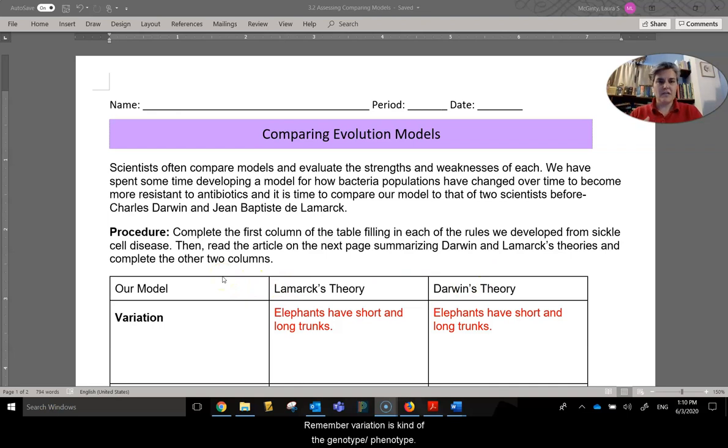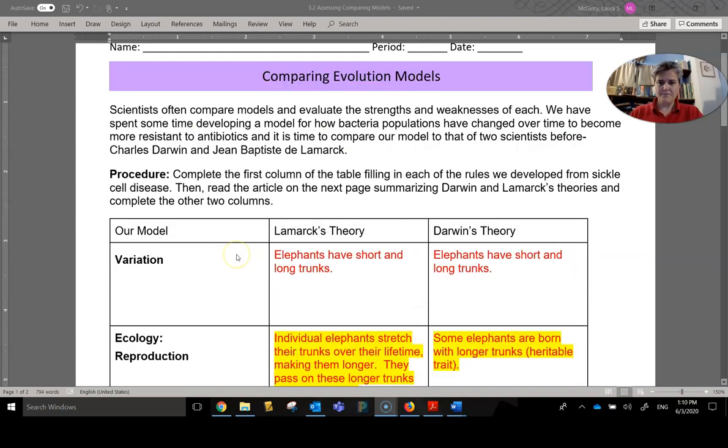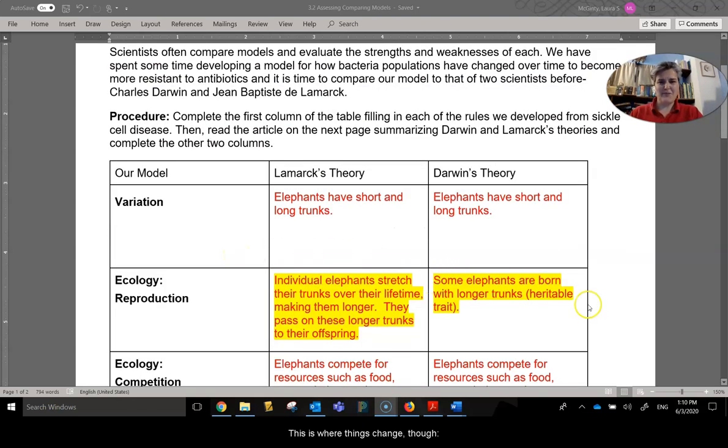Then the three different types of ecologies, and then the change over time. Then at the very end, we will look at the brief explanation of which model ours is most similar to and why. So first things first, variation. Remember, variation is kind of the genotype, phenotype, the traits, the different types of traits that we see in the population. So for Lamarck's theory, elephants have short and long trunks. That's also found in Darwin's theory. Elephants have short and long trunks. This is where things change, though.